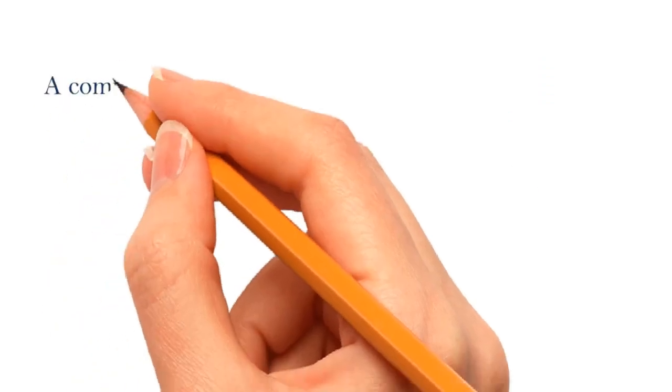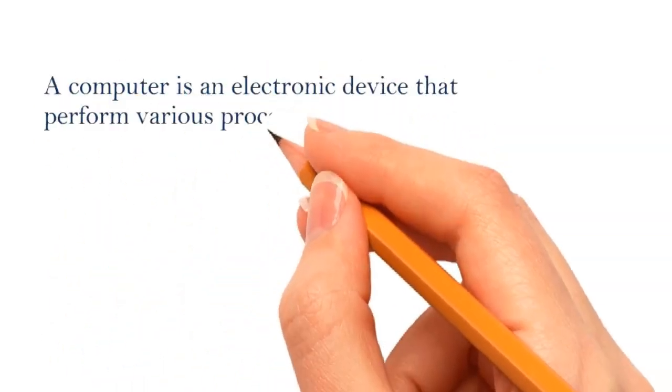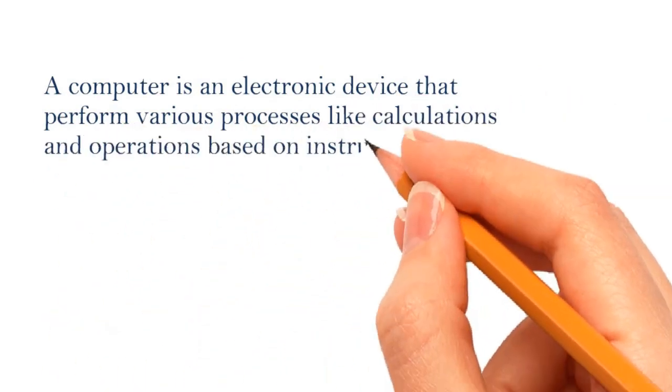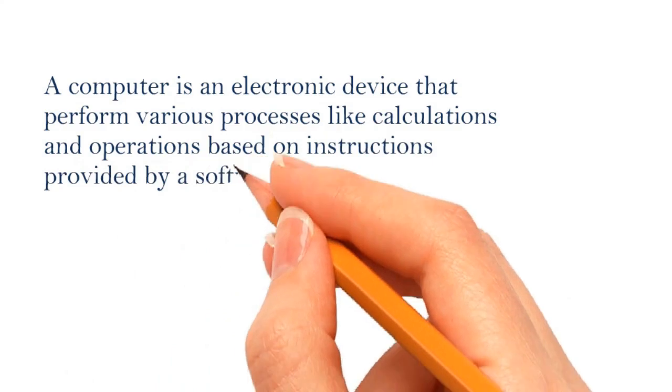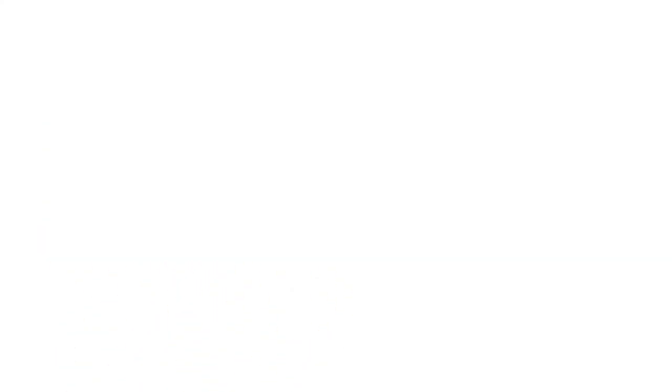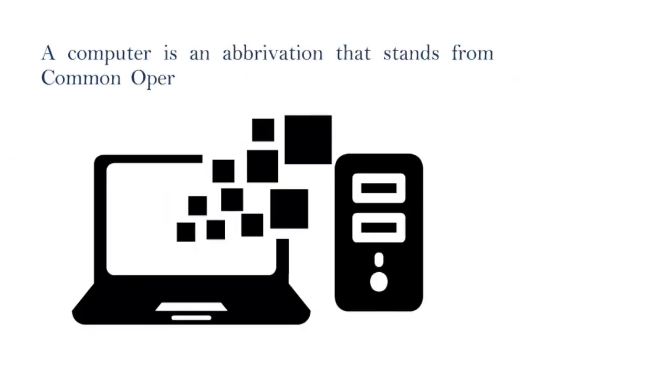What is a computer? A computer is an electronic device that performs various processes like calculations and operations based on instructions provided by software or input given using a mouse or keyboard. Computer is an abbreviation that stands for Common Operating Machine Purposely Used for Technological and Educational Research.